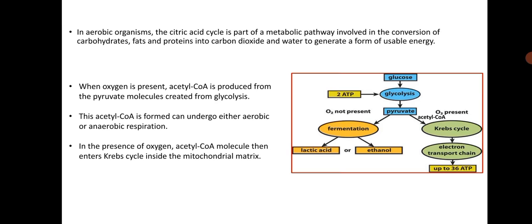The citric acid cycle is part of a metabolic pathway involved in the conversion of carbohydrates, fats, and proteins into carbon dioxide and water to generate a form of usable energy. When oxygen is present, the acetyl-CoA is produced from the pyruvate molecule created from glycolysis. This acetyl-CoA formed can undergo either aerobic or anaerobic respiration. In the presence of oxygen, the acetyl-CoA molecule then enters the Krebs cycle inside the mitochondrial matrix.